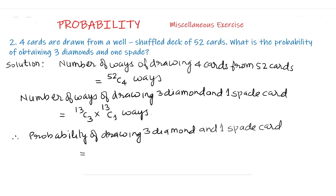Therefore, probability of drawing three diamonds and one spade card equal to 13C3 multiplied by 13C1 upon 52C4. This is the required probability.